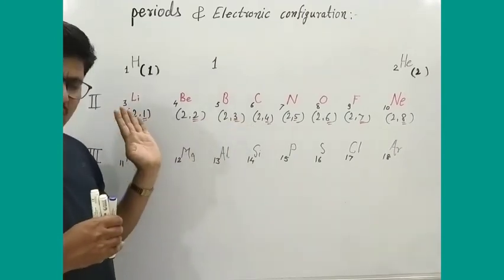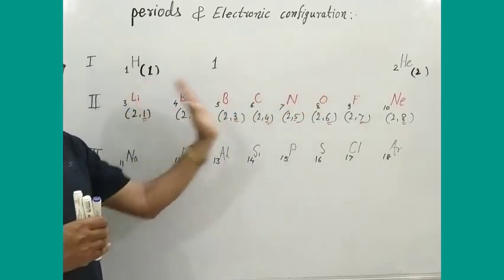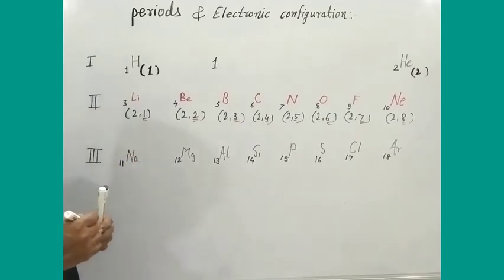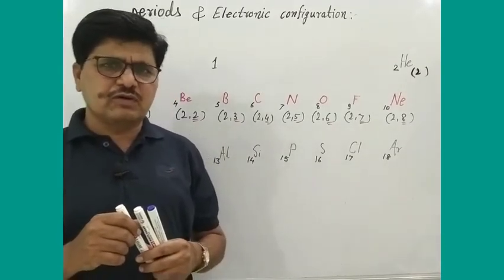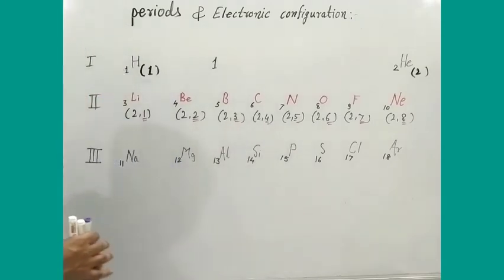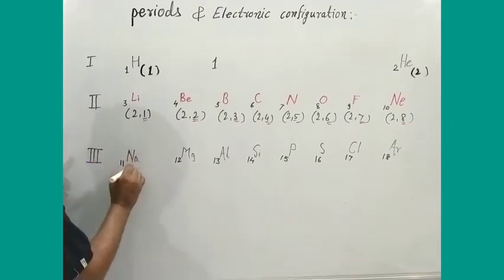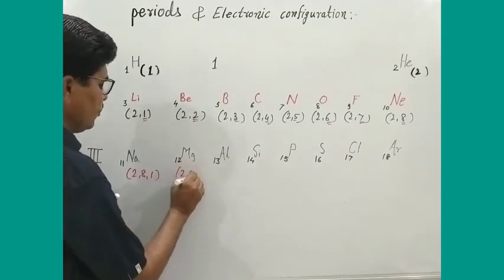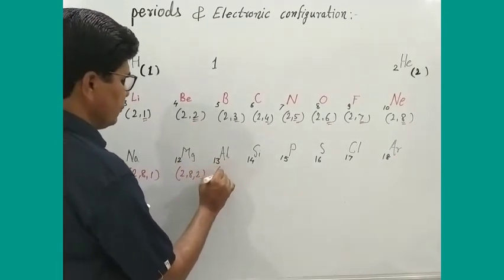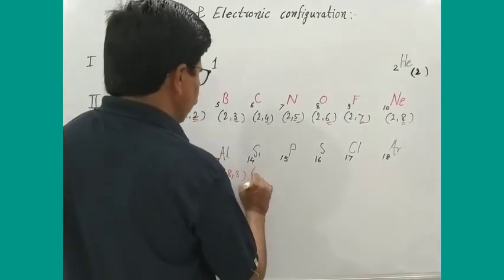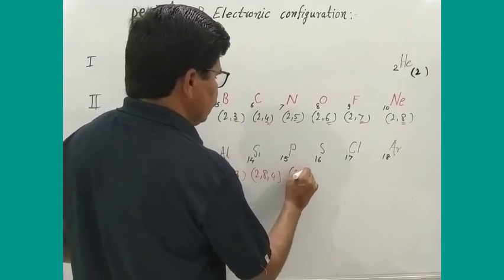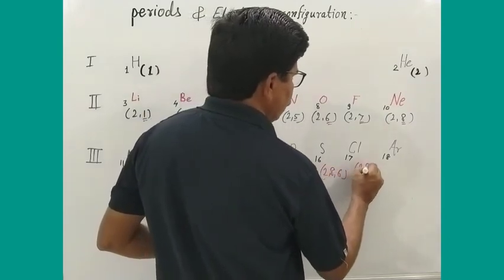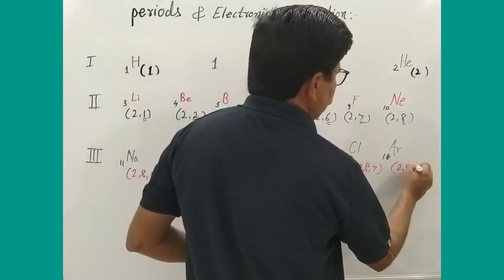The number of valence electrons increases by one. Sodium has atomic number 11, and its electronic configuration is 2,8,1. Magnesium is 2,8,2; aluminium is 2,8,3; silicon is 2,8,4; phosphorus is 2,8,5; sulfur is 2,8,6; chlorine is 2,8,7; and argon is 2,8,8.